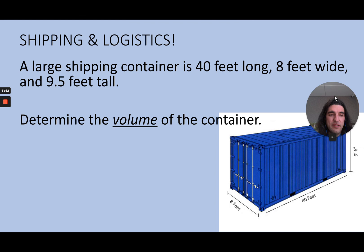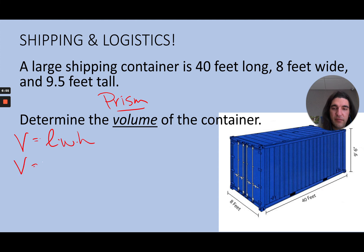All right, next up we have a shipping container. What shape does it look like? Looks like a prism. And for a nice prism, especially a rectangular prism, the volume is just length times width times height. So the volume of this thing will be 40 times 8 times 9.5, which is 3040 cubic feet.